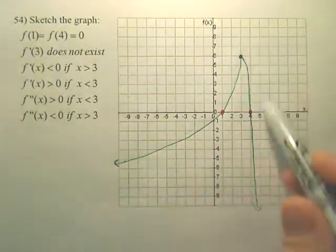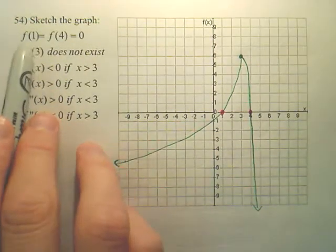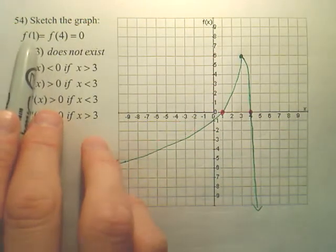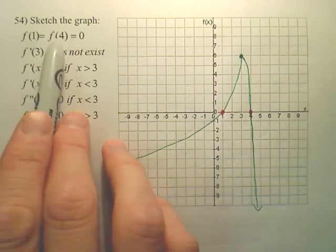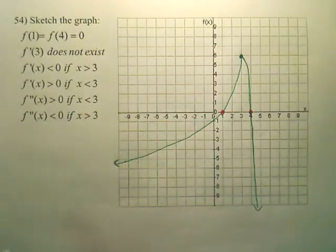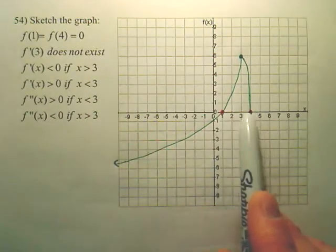If we want to sketch this graph, what we first notice from this information is that f(1) and f(4) are equal to 0. So you plot those points.